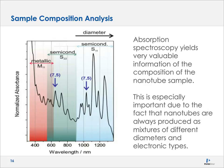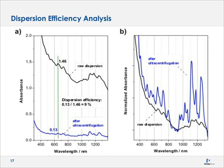When separating nanotubes in an ultracentrifuge, you can characterize different bands. The dispersion efficiency analysis shows the ultracentrifuge spectra in blue at the bottom and the raw dispersion at the top. With a simple peak ratio — here done at around 650 nm — you measure the absorbance of the ultracentrifuge peak versus the raw material peak, giving about a 9% efficiency for this particular sample. The normalized and superimposed spectra show that the purified nanotubes in blue have much better differentiated peak structure than the raw nanotubes in black.